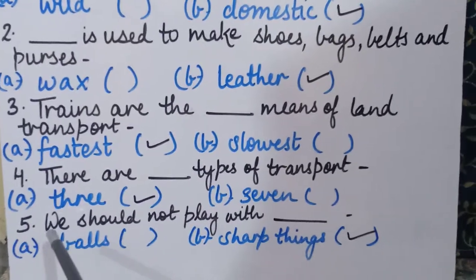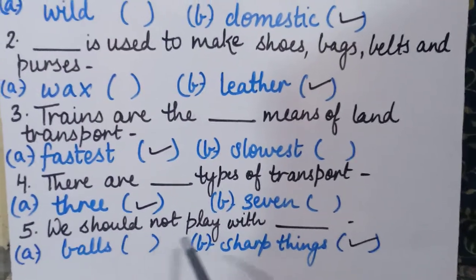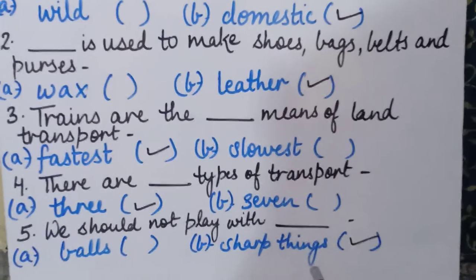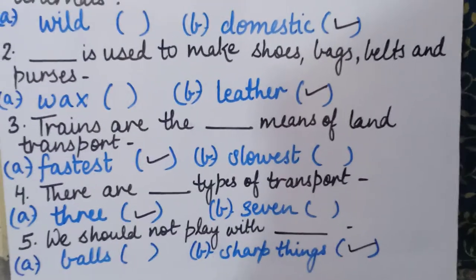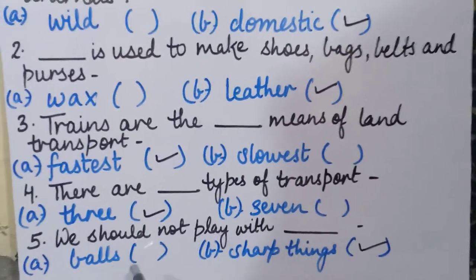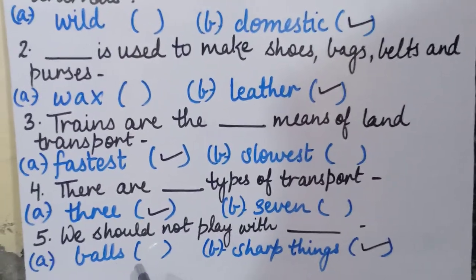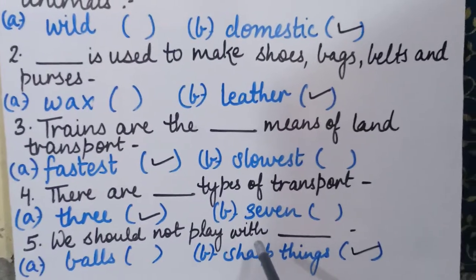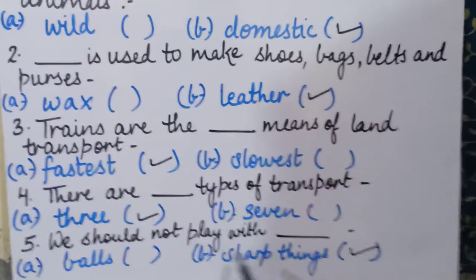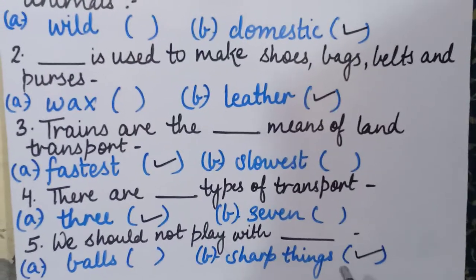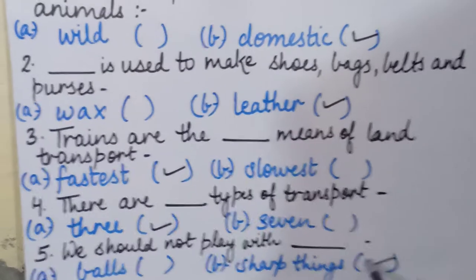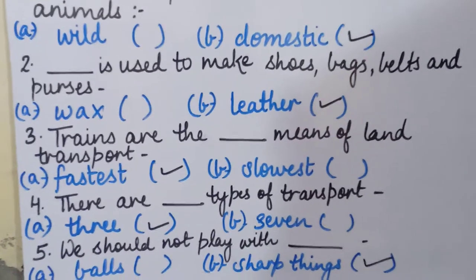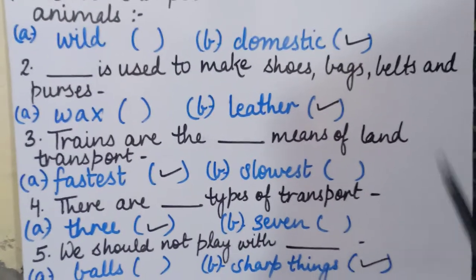The fifth sentence: 'We should not play with ___ — balls or sharp things.' We can play with balls, but we should not play with sharp things. So the correct answer is 'sharp things' — we will put a tick in front of that.